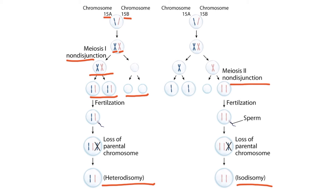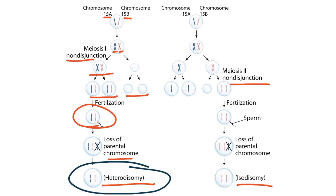Fertilization occurs, so now the cell has three copies of chromosome 15. However, trisomy 15 is incompatible with life, so one of these copies must be lost in order for the embryo to survive. After loss of genetic information, the final zygote contains two copies of chromosome 15, both of which were inherited from the mother. Non-disjunction during meiosis 1 results in a daughter cell containing one chromosome 15A and one chromosome 15B. However, if non-disjunction occurs during meiosis 2, this results in two 15B chromosomes. This slight difference ultimately determines if we refer to the abnormality as heterodisomy or isodisomy.